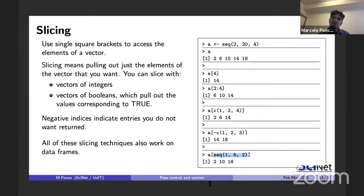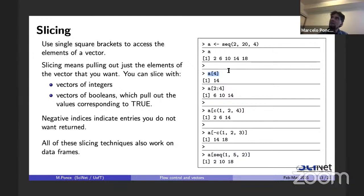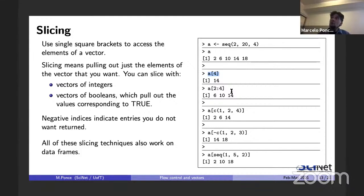Slicing is much more efficient than using a for loop combined with an if statement. In a for loop approach, you'd loop over elements and check conditions — more code and less readable. Slicing is a single vectorized operation, while a for loop repeats many operations and adds conditional checks. Whenever possible, use slicing instead of looping and conditionals combined.